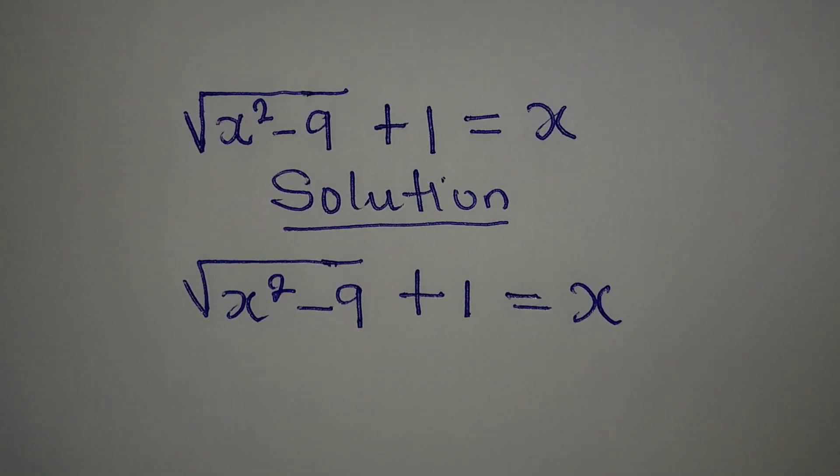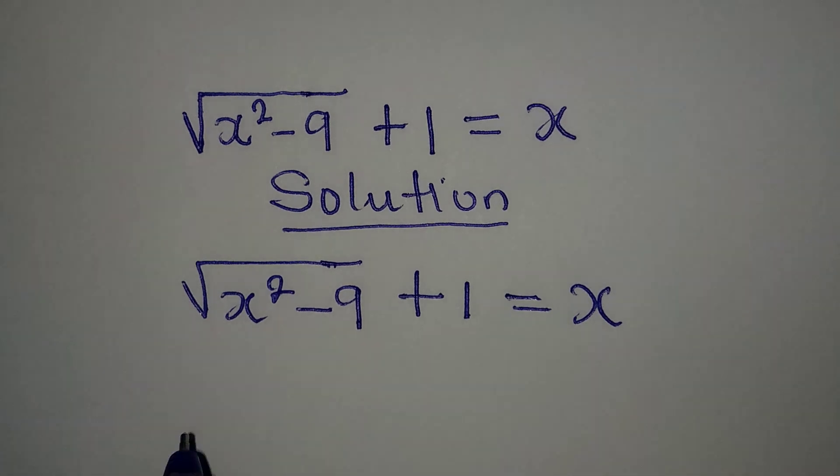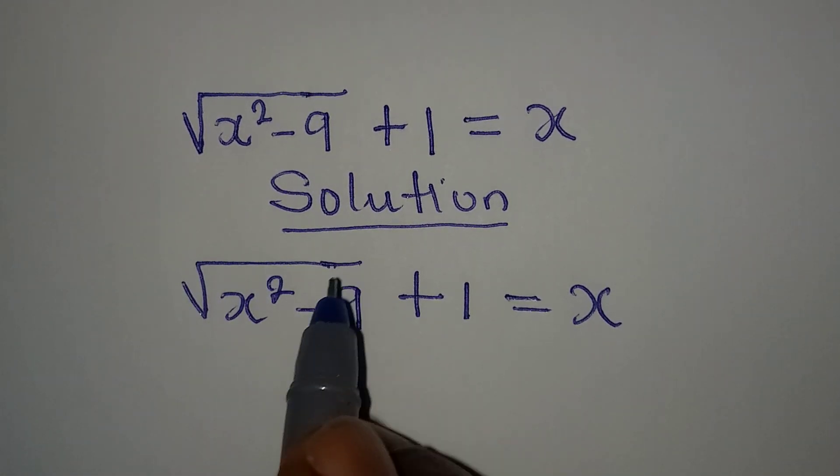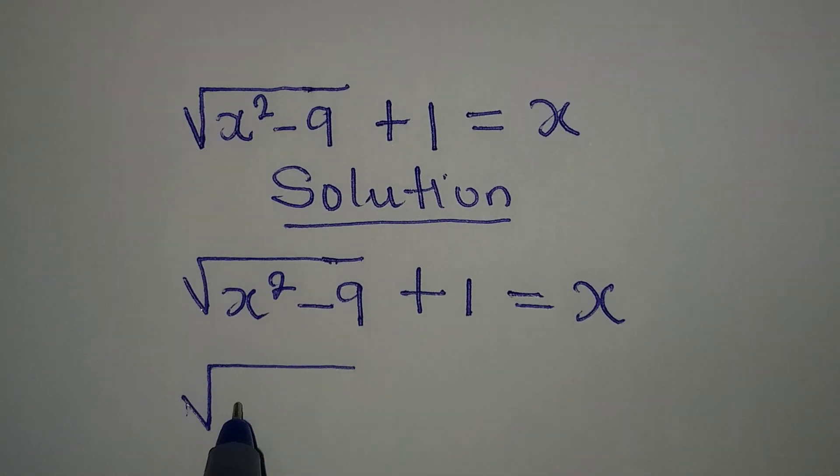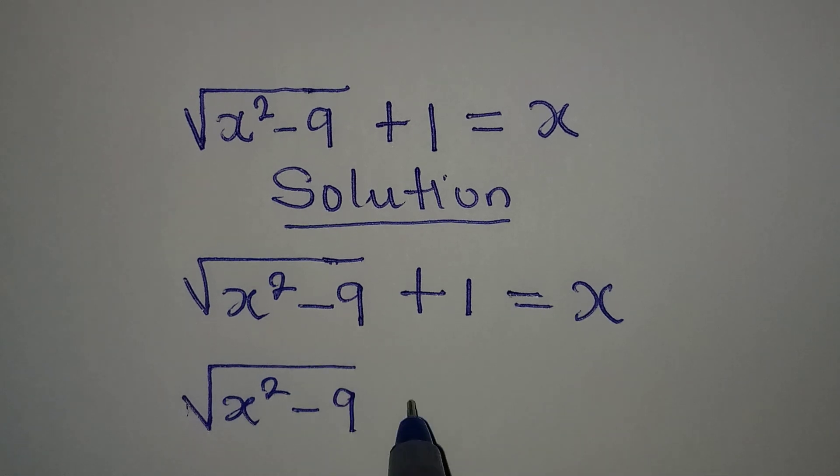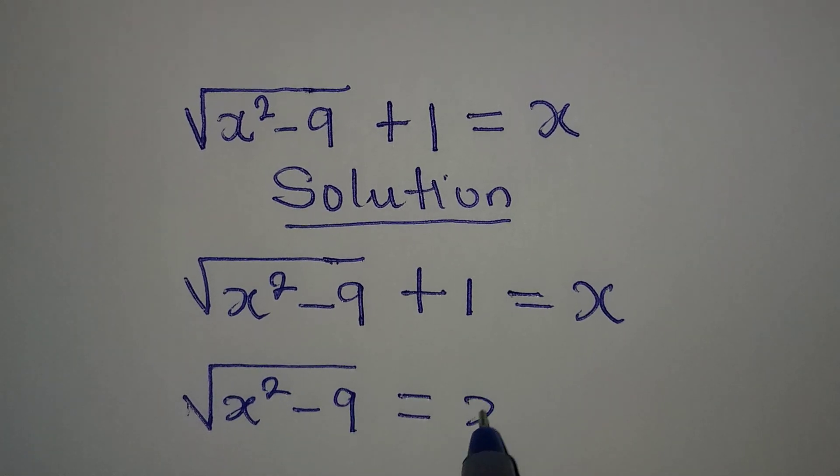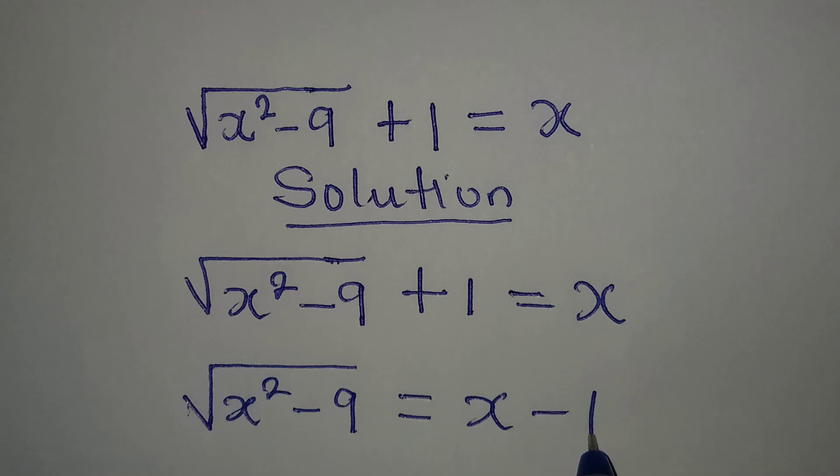I hope you know what to do already, because you have to make the whole of this the subject first. So we have square root of x squared minus 9 to be equal to x minus 1.